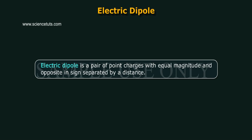Electric Dipole. An electric dipole is a pair of point charges with equal magnitude and opposite in sign separated by a distance.